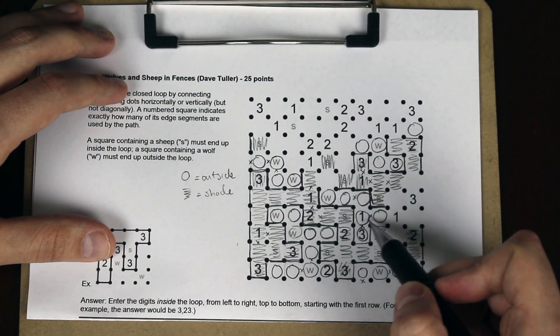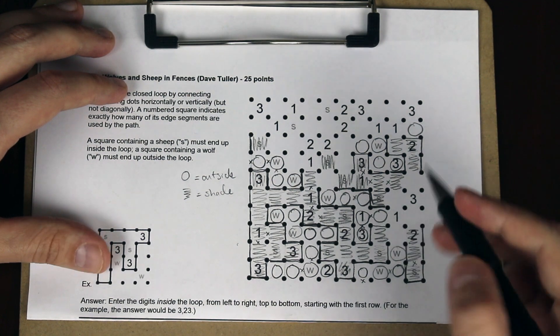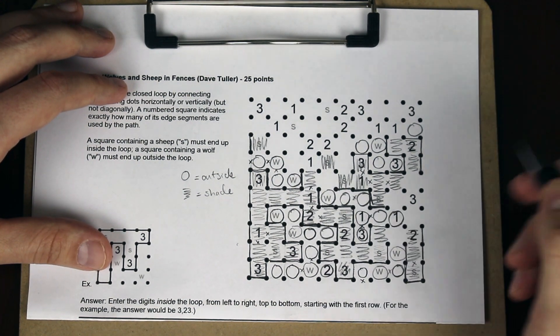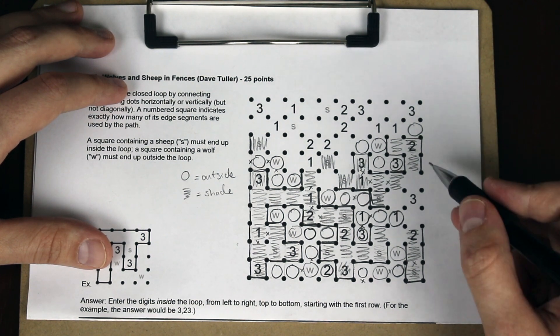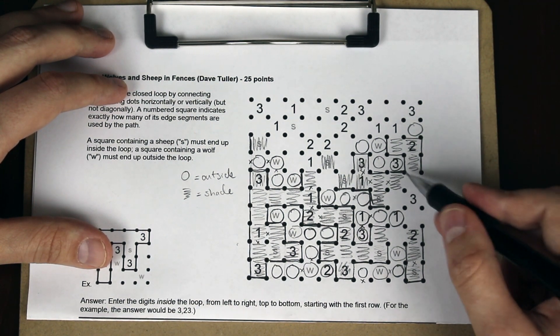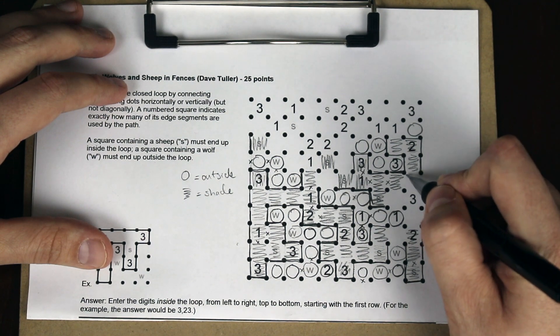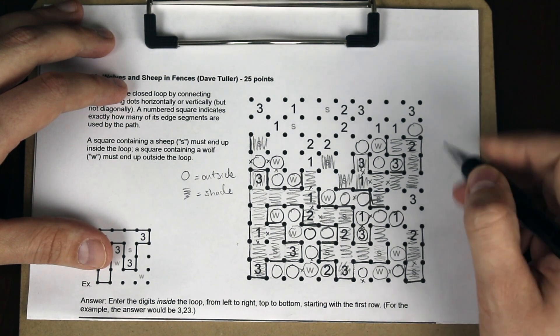This outer wolf here still needs to escape. So we still have to actually bring it out of its region here. But to figure out where it goes from there, we're going to have to look some more at what's happening up here at the shading.